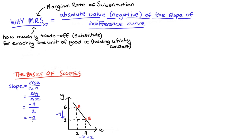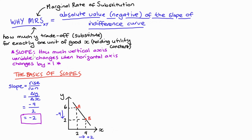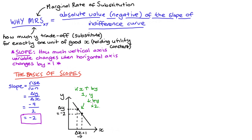Now what does this slope coefficient actually mean? As a general rule, the slope is going to tell us by how much our vertical axis variable changes if we increase our horizontal axis variable by 1. So the slope of negative 2 is telling us that as we move along this line, if we increase x by 1 — that's our horizontal axis variable — we're going to decrease y, that's our vertical axis variable, by 2.